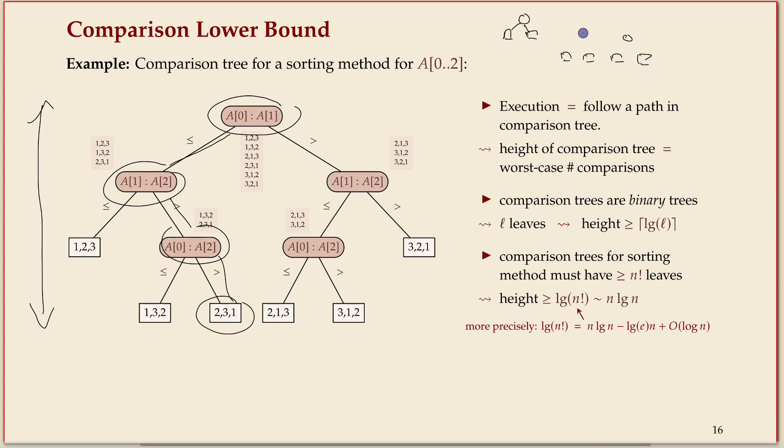So the height, if you have l leaves, is at least log l, because whenever you get one step down you can at most double the number of leaves. That's all that's behind this.